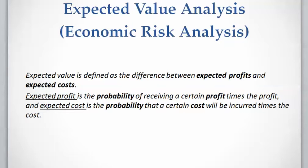In this video I will explain the second method to incorporate risk and uncertainty in project evaluations. This method is called expected value analysis. Expected value is the difference between expected profits and expected costs. Expected profit is the probability of receiving a profit multiplied by the payoff, and expected cost is the probability that a certain cost will be incurred multiplied by that cost.